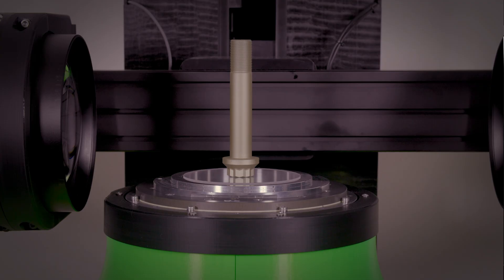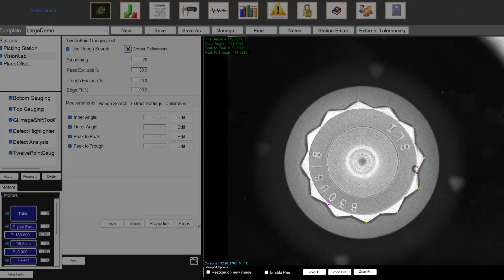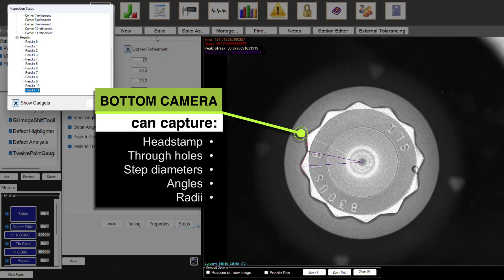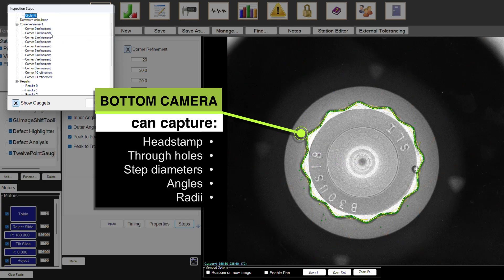The built-in bottom camera provides the added ability to measure and inspect part features such as head stamp, through holes, step diameters, angles, and radii.